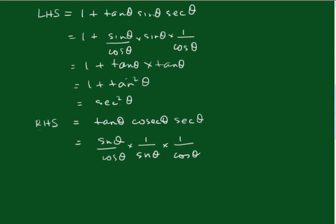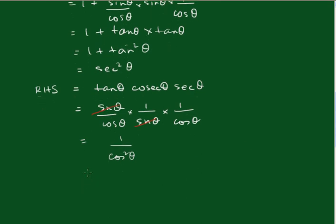Now you can see that the sinθ terms cancel out, and you're left with 1/cosθ × 1/cosθ = 1/cos²θ = sec²θ, which equals the left hand side.